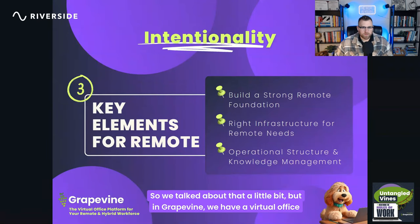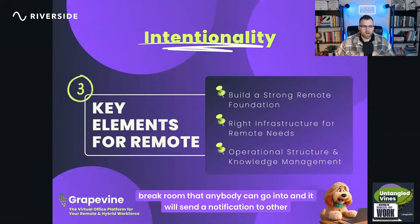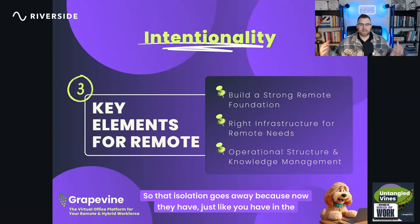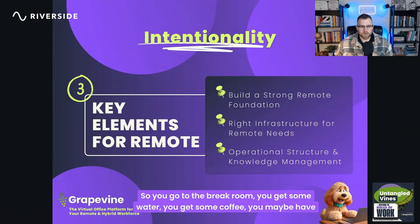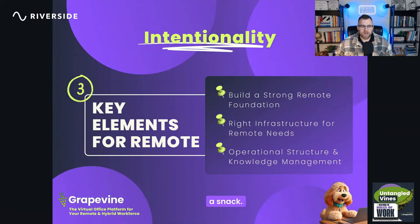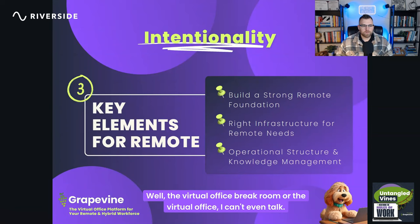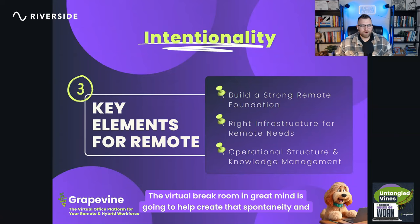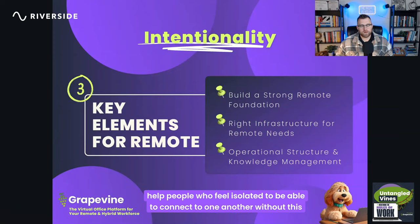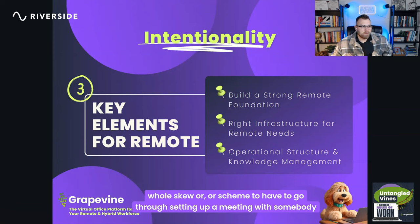For connection prioritization, emphasize intentional efforts to connect remote employees and address potential isolation. In Grapevine, we have a virtual break room that anyone can enter, sending a notification to teammates — just like a real office break room where you chat with whoever comes in. This creates spontaneity and helps people who feel isolated connect without having to formally schedule a meeting just to avoid feeling lonely.